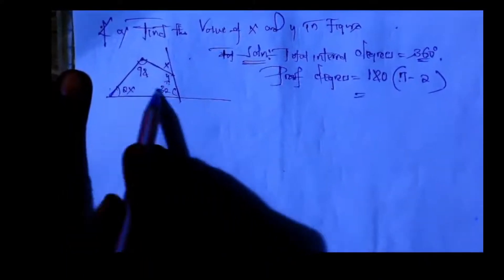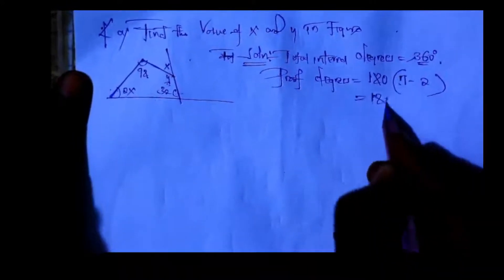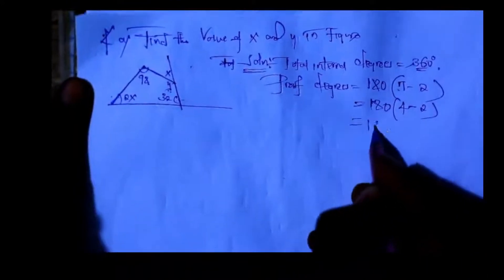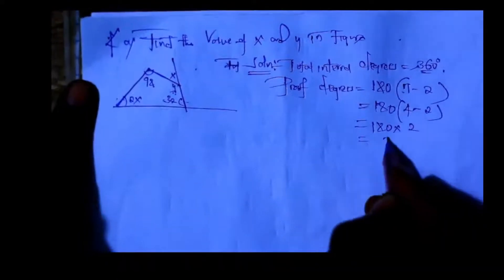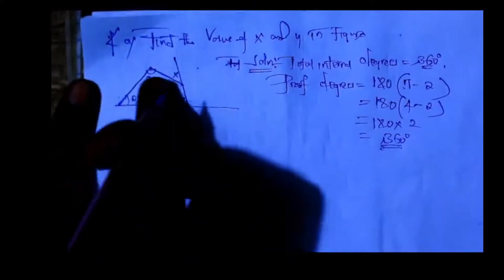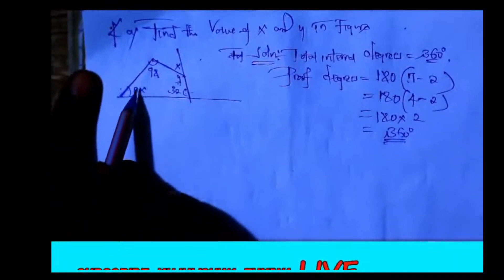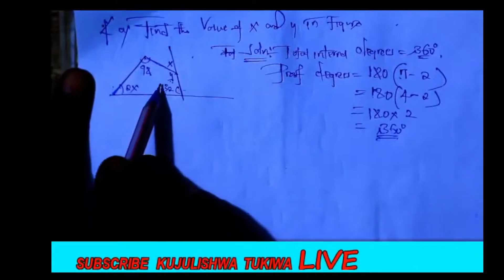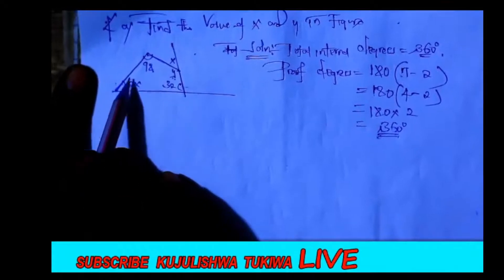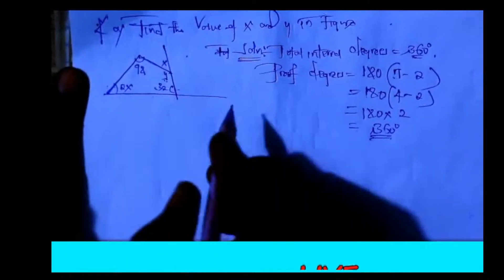And therefore, because there are four angles inside, that means the total internal degrees equal 360 degrees. So that means in order to find these values — this, this, this, and this — when you add them all together the total is 360.